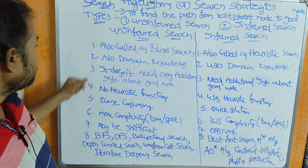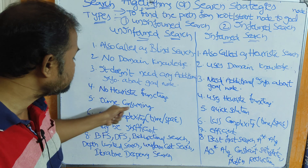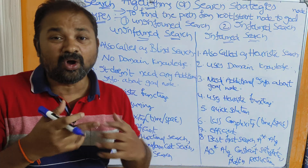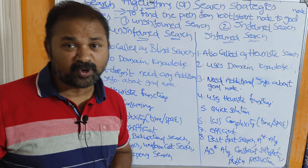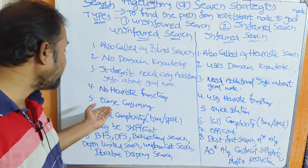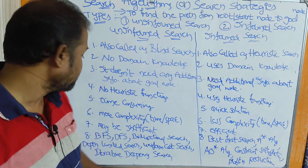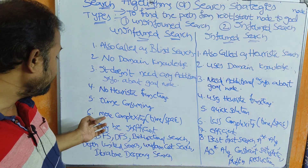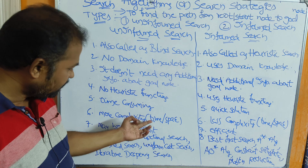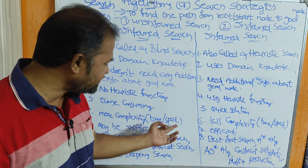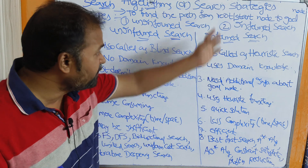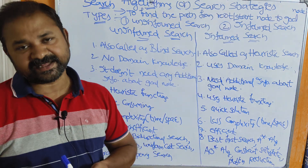The next point: the uninformed search technique is time-consuming, because almost all the nodes will be explored one by one until the goal node is found. It requires more time, and both time complexity and space complexity are very high when compared with informed search algorithms.